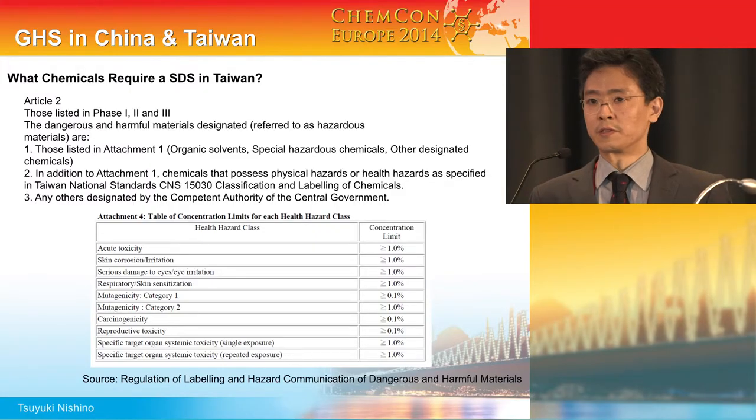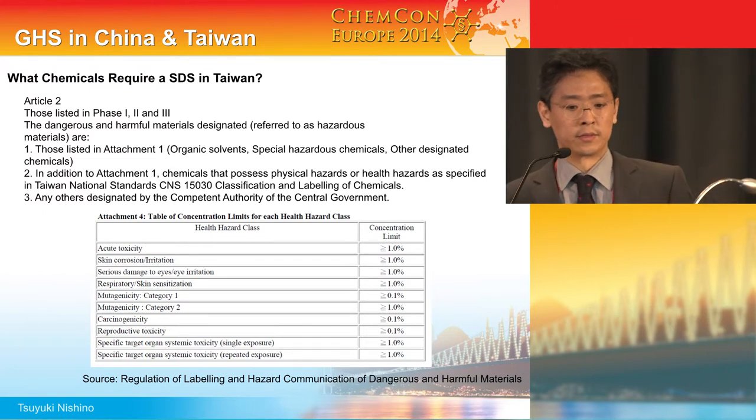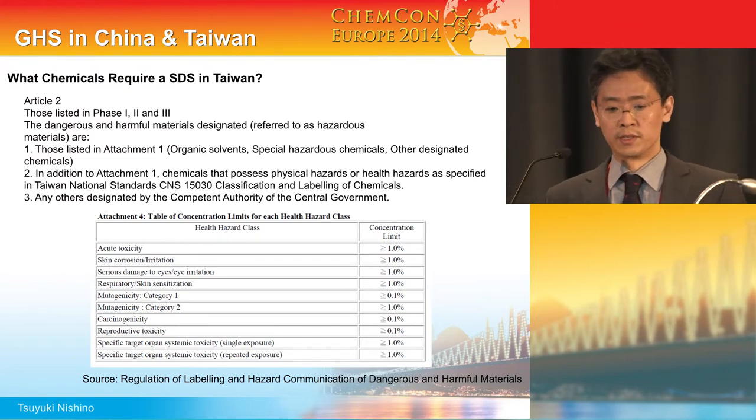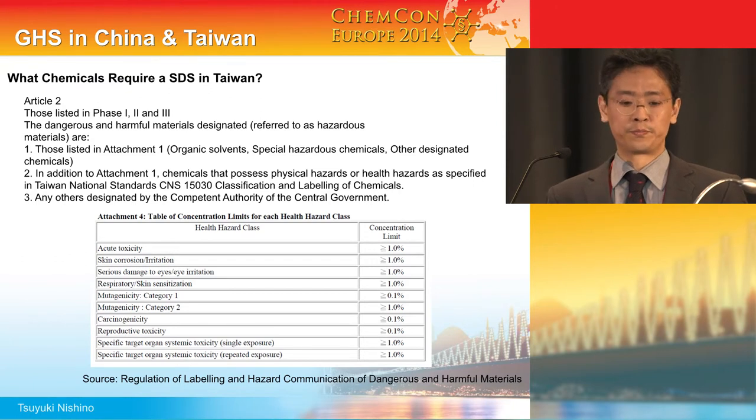Taiwan GHS is currently based on the second revised edition of GHS. Chemicals requiring an SDS in Taiwan include those listed in phases 1, 2 and 3, those listed in attachment 1 of the regulation of dangerous and harmful chemicals or materials, chemicals that possess physical or health hazards, or any others designated by the authority.